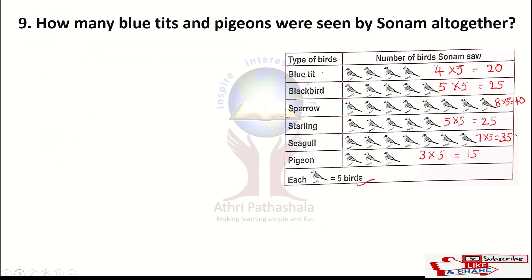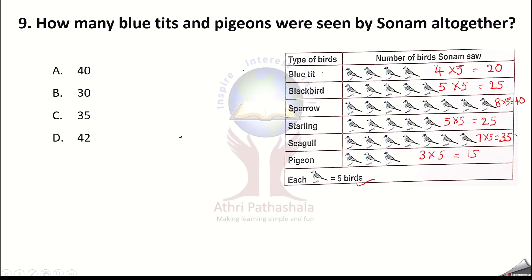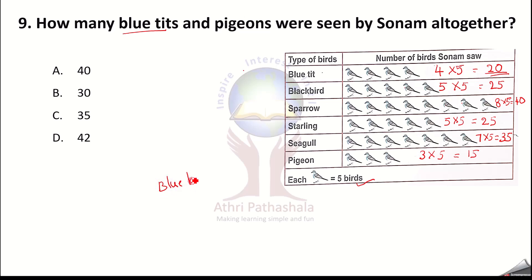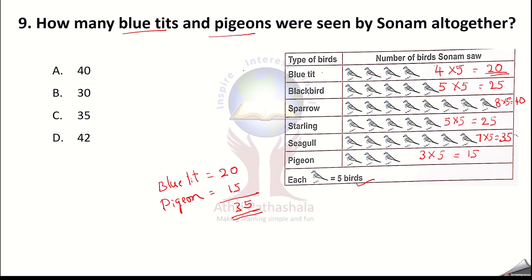Question 9: how many blue tits and pigeons were seen by Sonam altogether? Blue tits: 20 birds. Pigeons: 15 birds. Altogether: 20 plus 15 equals 35 birds. Option C is the correct answer.